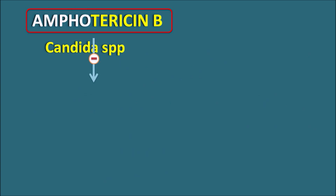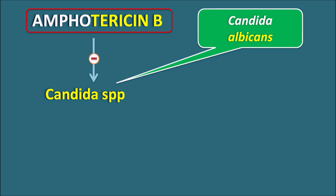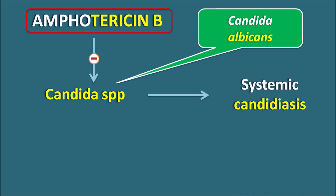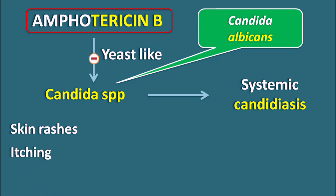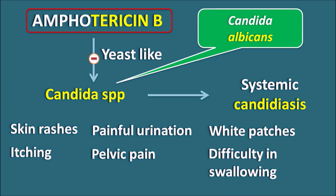Amphotericin B is also effective against Candida species. One important organism is Candida albicans, which mainly produces systemic Candidiasis, a yeast-like infection. Symptoms depend on the spread of infection: cutaneous involvement produces skin rashes and itching; urinary involvement produces painful urination, pelvic pain, and abdominal pain; esophageal involvement produces oral thrush with white patches on the tongue and difficulty swallowing. All these symptoms of systemic Candidiasis can be treated with Amphotericin B.